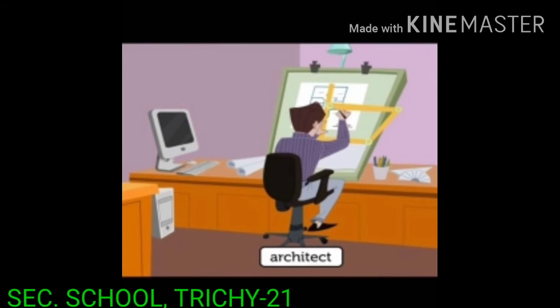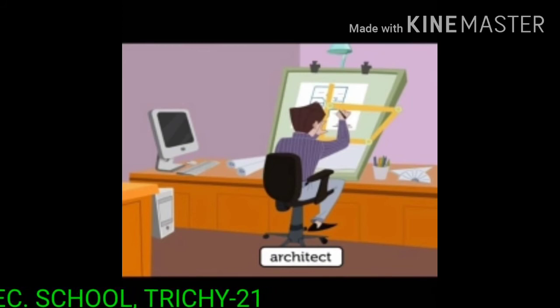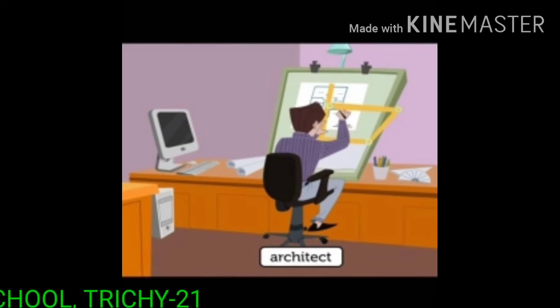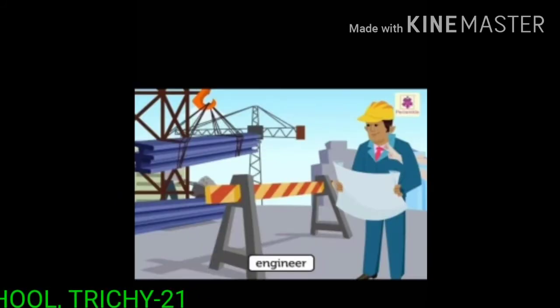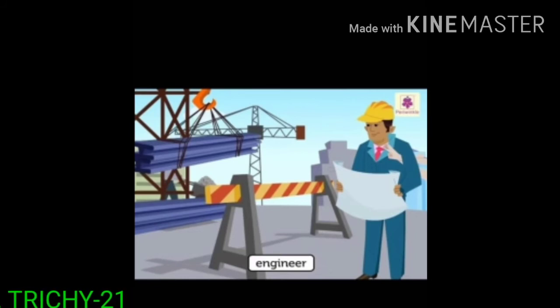See the first person — he is an architect. He makes the plan for the house. The next person is an engineer. He is in charge of the whole building.